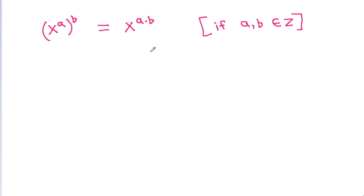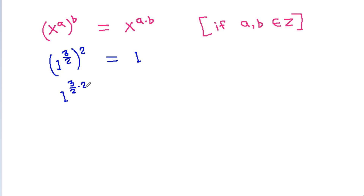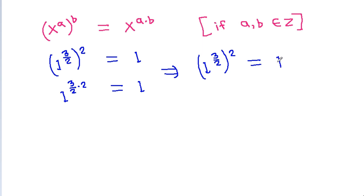Then I have a counter example. 1 power 3 by 2, whole power 2, it is 1. And 1 power 3 by 2 times 2 is equal to 1 power 3 by 2 times 2. And 3 by 2 is not an integer, so this condition is wrong.